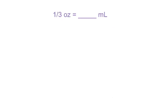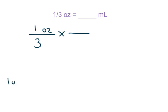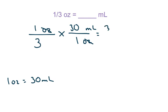Now we have one-third of an ounce to milliliters. For fractions, you have to multiply your fractions. Write it as a fraction with the unit on top because you're going to cancel — you don't put it over 1 since it's already in fraction form. So one-third of an ounce, times your conversion factor. One ounce is 30 milliliters, so you need ounces on the bottom so they can cancel, and milliliters go on top. Cancel units, multiply across the top, multiply across the bottom, divide: 30 divided by 3 is 10. The unit left over is milliliters, so you have 10 milliliters.